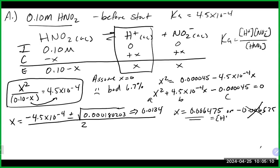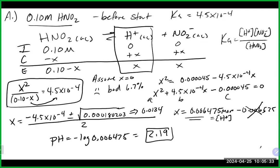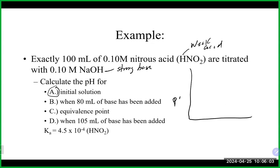That positive x value equals the H+ concentration, so pH = -log(0.006475), giving us a pH of 2.19 to start our titration. This makes sense as it's acidic. A good reminder: make sure you check your assumption using the 5% rule - if it's bigger than 5%, you need to solve it another way, as we did here with the quadratic.